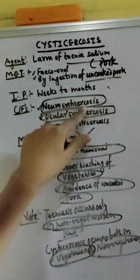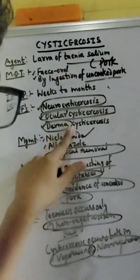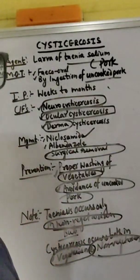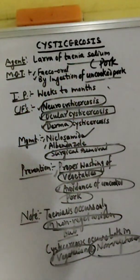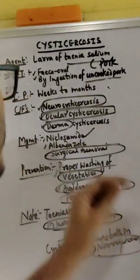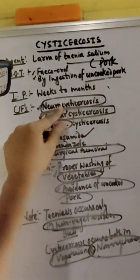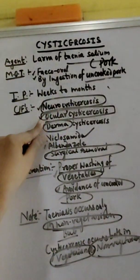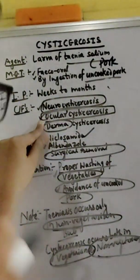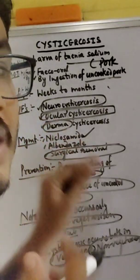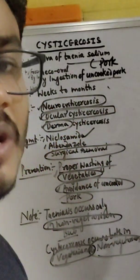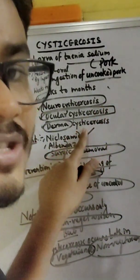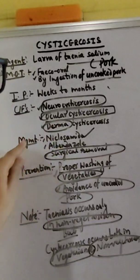The clinical features are neurocysticercosis, ocular cysticercosis, and dermal cysticercosis. Neurocysticercosis occurs when the larva of Taenia solium enters into the brain. If the larva enters into the eye, it causes ocular cysticercosis, and if it enters into the skin, it is called dermal cysticercosis.